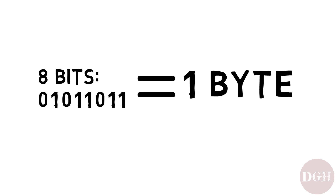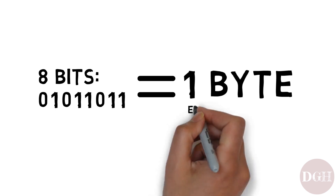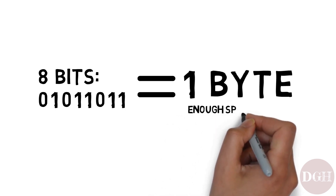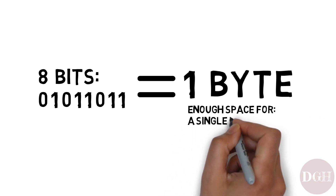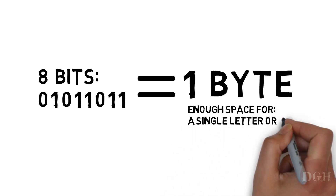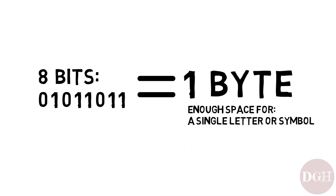In everyday terms, you can think of 1 byte as the amount of space it takes to store one single letter or symbol in a text document. So if you wrote a short story with 1,000 words, this would require about 1,000 bytes of storage space.